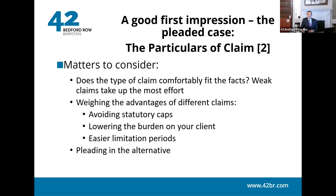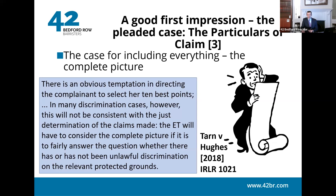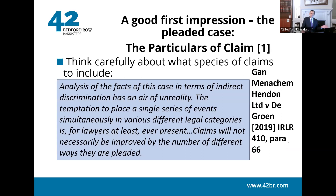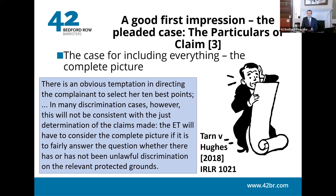Consider whether the type of claim comfortably fits the facts. There are always things to weigh: statutory caps, the burden on your client, limitation. You can plead in the alternative. One tribunal may say there are too many claims; another may say there aren't enough — it's a very difficult balancing act. A tribunal may also state it's not consistent with the just determination of claims to direct a claimant to select only their best 10 points in a discrimination case.